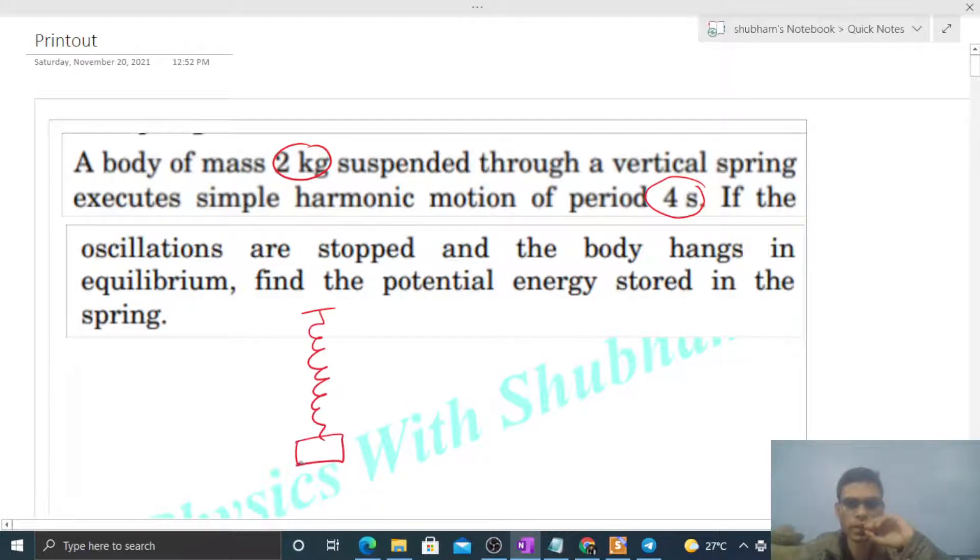So this way we have a vertical spring and here is a block. The mass of the block is given as 2 kilograms. Spring constant of the spring is not given, but time period is given. Time period for oscillation of this block is given as 4 seconds.